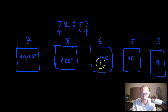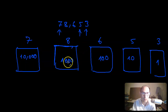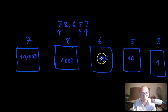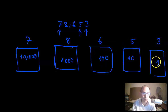That means seven times ten thousand would be seventy thousand pebbles, eight times a thousand would be eight thousand pebbles, six times a hundred would be six hundred pebbles, five times ten would be fifty pebbles, and three times one is three pebbles.